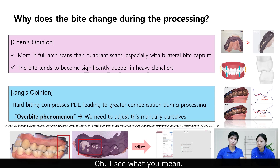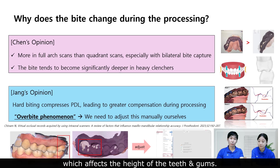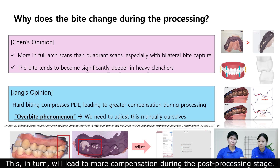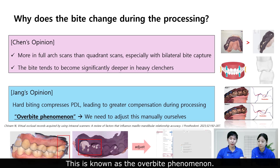Oh, I see what you mean. This is likely because if the patient bites down hard, the PDL gets compressed, which affects the height of the teeth and gums. This, in turn, will lead to more compensation during the post-processed stage. This is known as the overbite phenomenon.